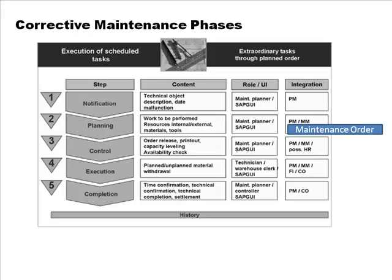So now we look at the corrective maintenance process — just like the sales order process, purchase management process, or manufacturing process, you've got a corrective maintenance process. The corrective maintenance process begins with something called a maintenance notification. A notification is when you realize there is a need for maintenance — somebody reports a problem, you've come to recognize that there is some fault, and the whole process begins with the maintenance notification.